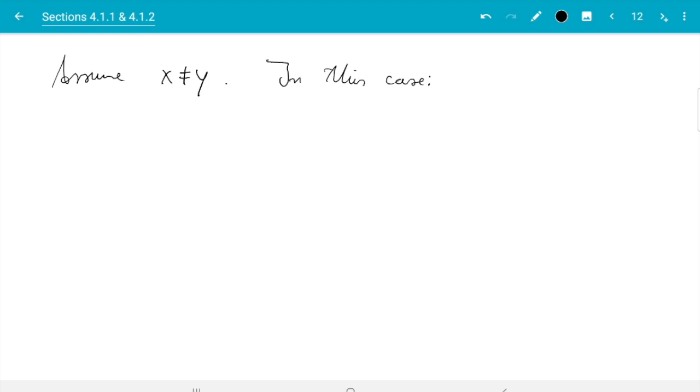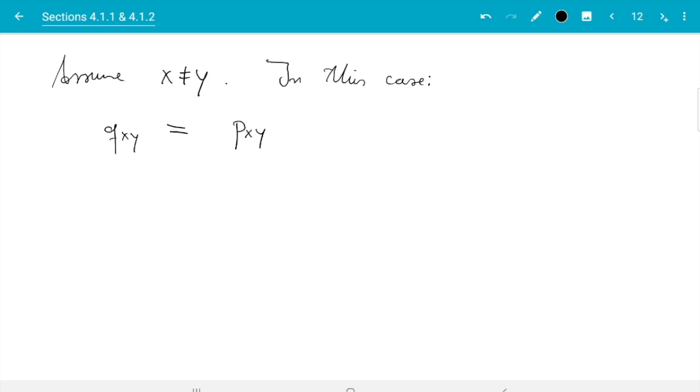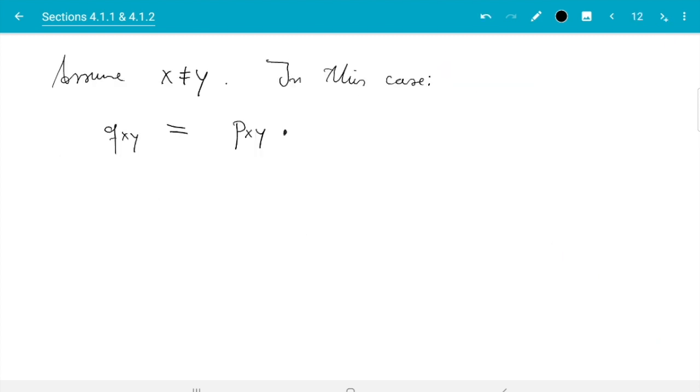So in this case, q_xy is the product of two things. First, we need to propose Y. And given in state X, the probability of that happening is p_xy. This is here. The probability given that X_{j-1} was X going to Y is p_xy. And then we multiply to this the probability of accepting Y, but we had a name for that. That's what we called alpha. So we just write that. The first term is the probability of proposing little y. And the second term is the probability of accepting. And that is how we can go from X to Y if X and Y are different from each other.